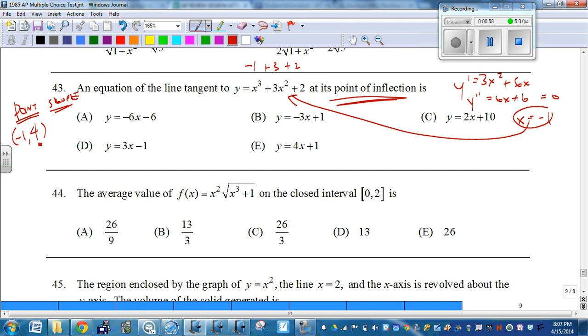And now to find the slope, we're just going to put negative 1 into the derivative. Derivative gives us our slope. So 3 times 1 is 3, minus 6, we get a slope of negative 3.